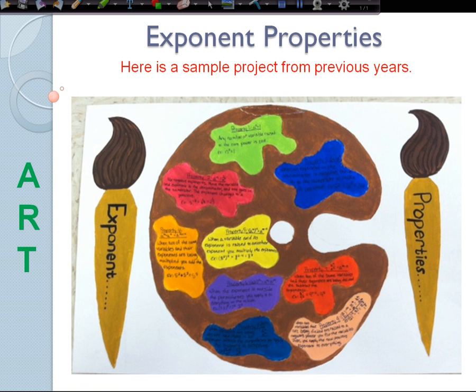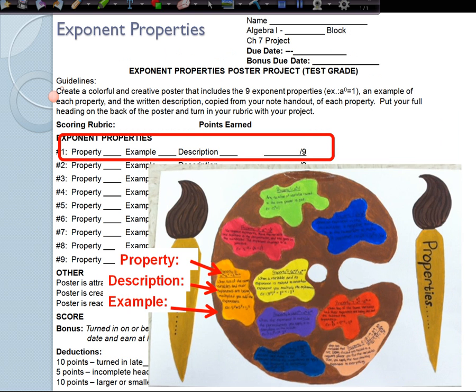Here's a sample project from previous years. Their theme is art. Again, notice that in each one they have the property written, the description of the property from their notes handout, and their very own example that they've made up.